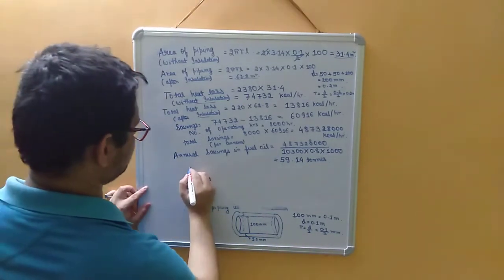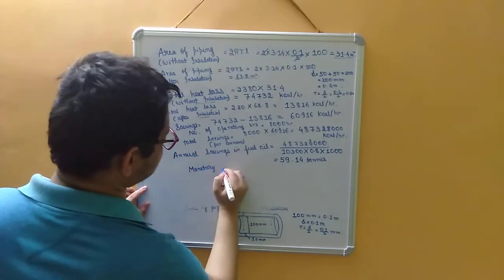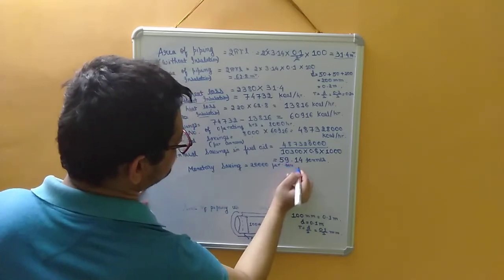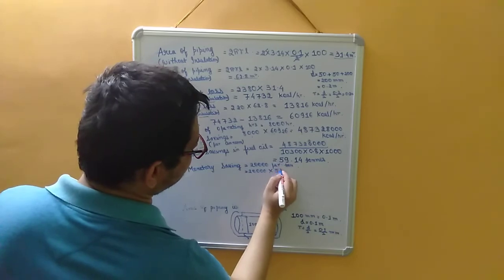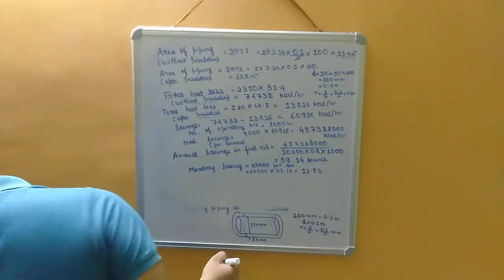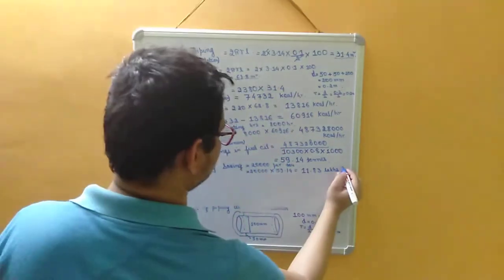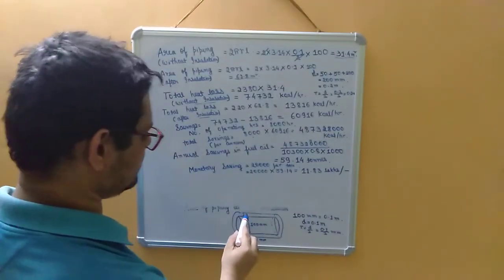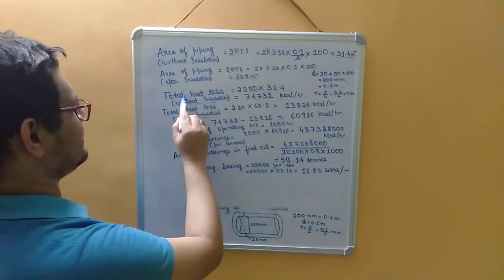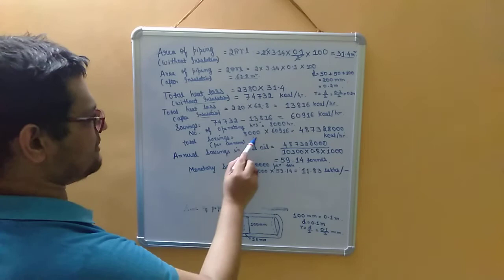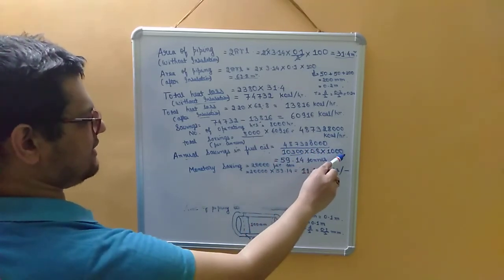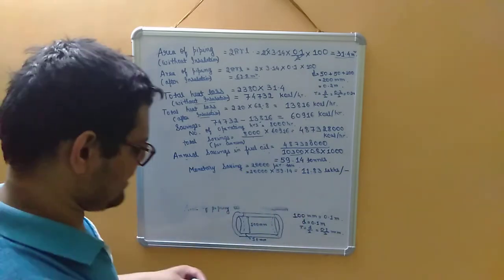The monetary savings: the cost of fuel oil is 20,000 per ton, and annual fuel savings is 59.14 tonnes, so monetary savings = 20,000 × 59.14 ≈ 11.83 lakhs. To summarize: we calculated insulation area, heat transfer losses, total loss, savings multiplied by operating hours, then converted to fuel and monetary savings.